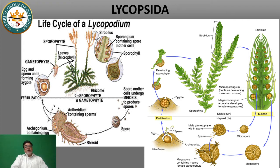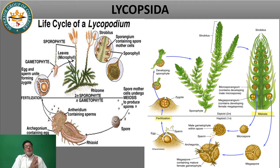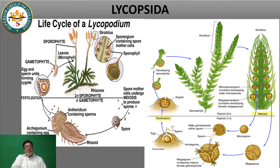The members of Lycopsida fall into two categories. Lycopodium is a homosporous plant. A homosporous plant means it produces only one kind of spore within its strobilus. The sporangia produce only one kind of spore. So Lycopodium is a homosporous plant, and this phenomenon is called homospory.